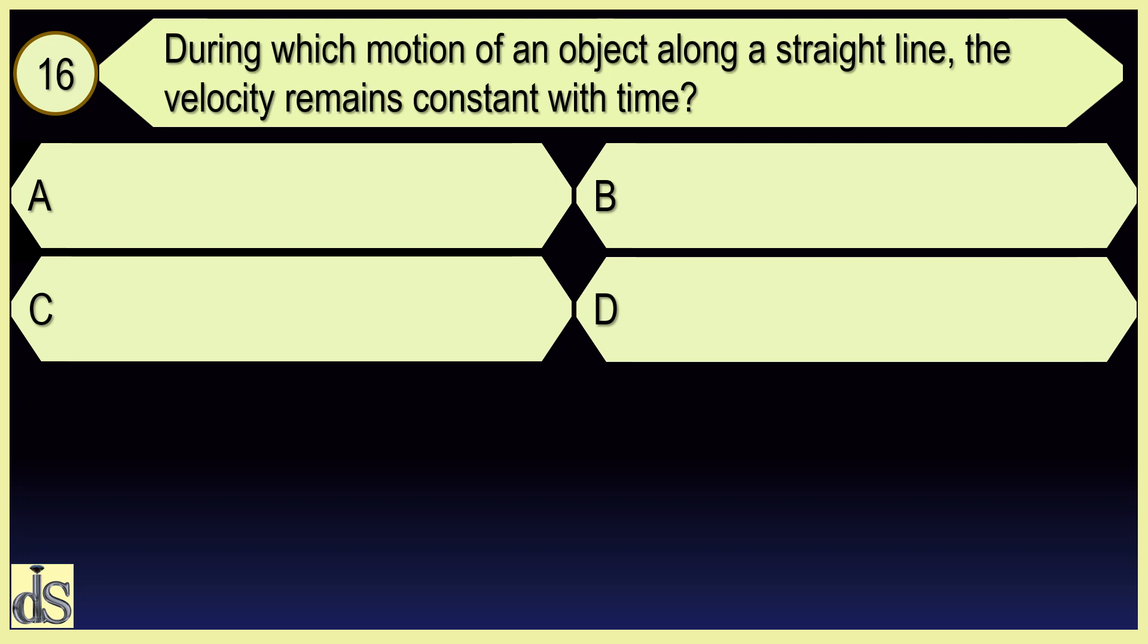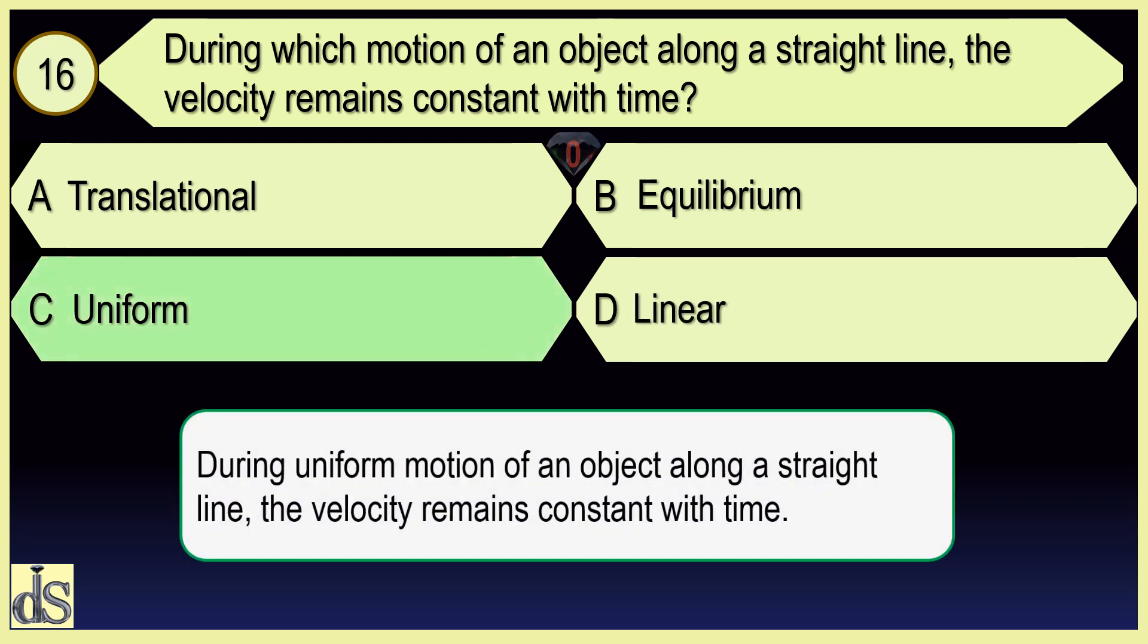During which motion of an object along a straight line the velocity remains constant with time? Uniform.